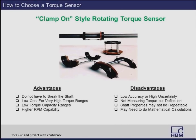Clamp-on style torque sensors are generally used when breaking the shaft and inserting an inline torque sensor is not feasible. The advantage is very low cost for very high torque ranges — for example, clamping onto a shaft that is a foot or two feet in diameter is much easier than inserting a rotating sensor. They also offer very low capacity ranges and higher RPM capabilities. The disadvantage is that you're not actually measuring torque but deflection in the shaft. You must know the shaft's manufacturing properties to do mathematical calculations to obtain an accurate torque reading. These sensors are used more for convenience than for applications requiring high accuracy.